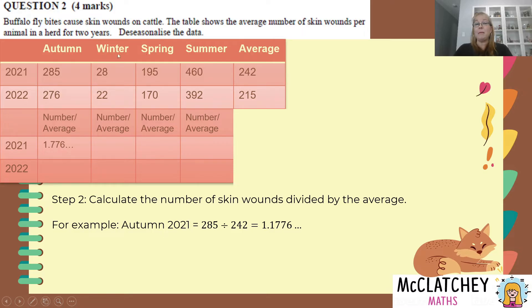We're going to repeat that process now for the remaining seven numbers. So we're going to take for example winter 28 divided by 242, 195 divided by 242 and 460 divided by 242 and pop that in the table. Repeat for 2022, take 276 divided by 215, 22 divided by 215 and so on all the way through to the bottom of that table and we achieve our second mark for working out the number divided by the yearly average values. So we're halfway there now.